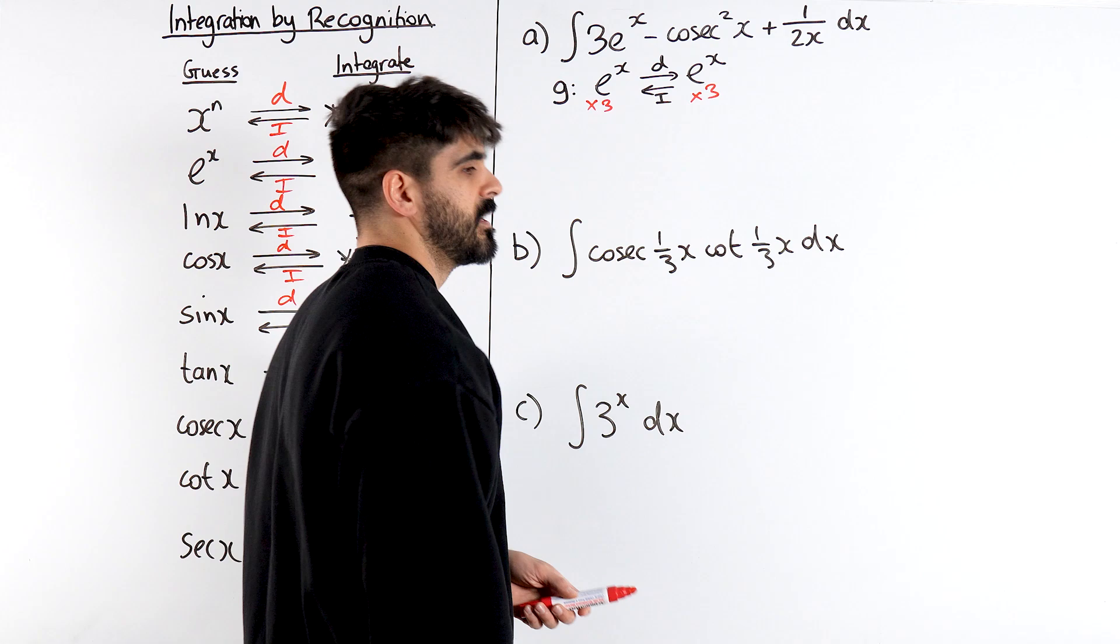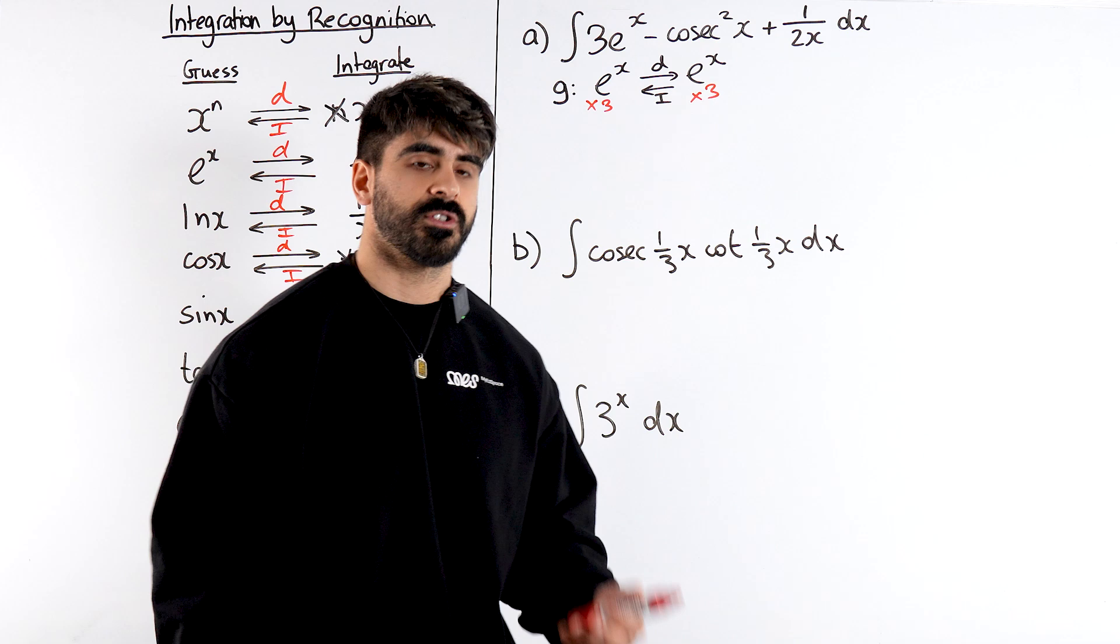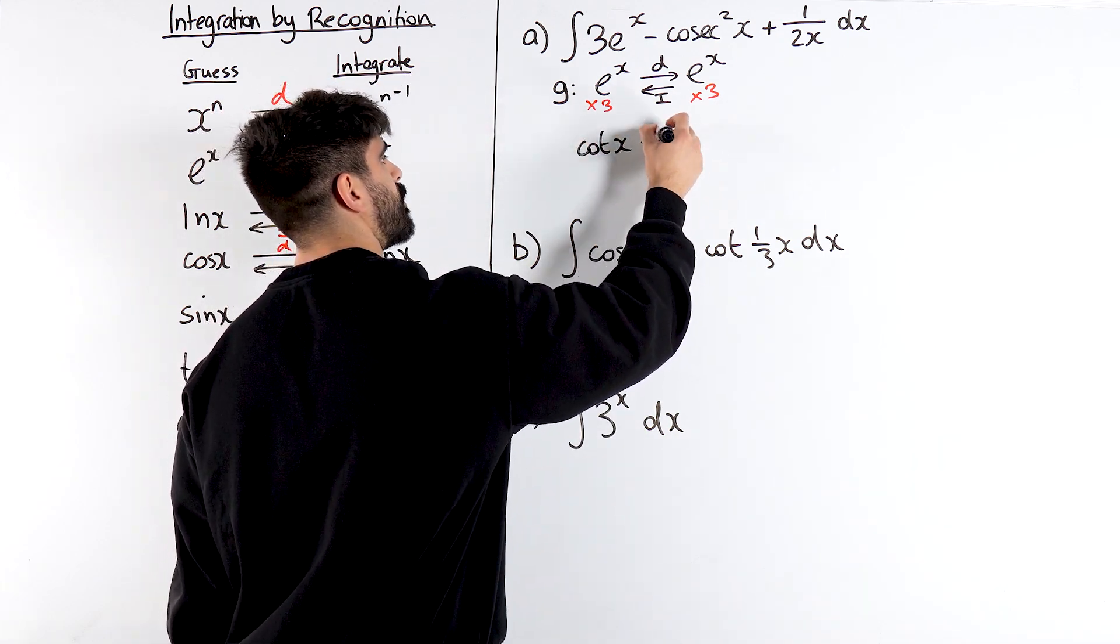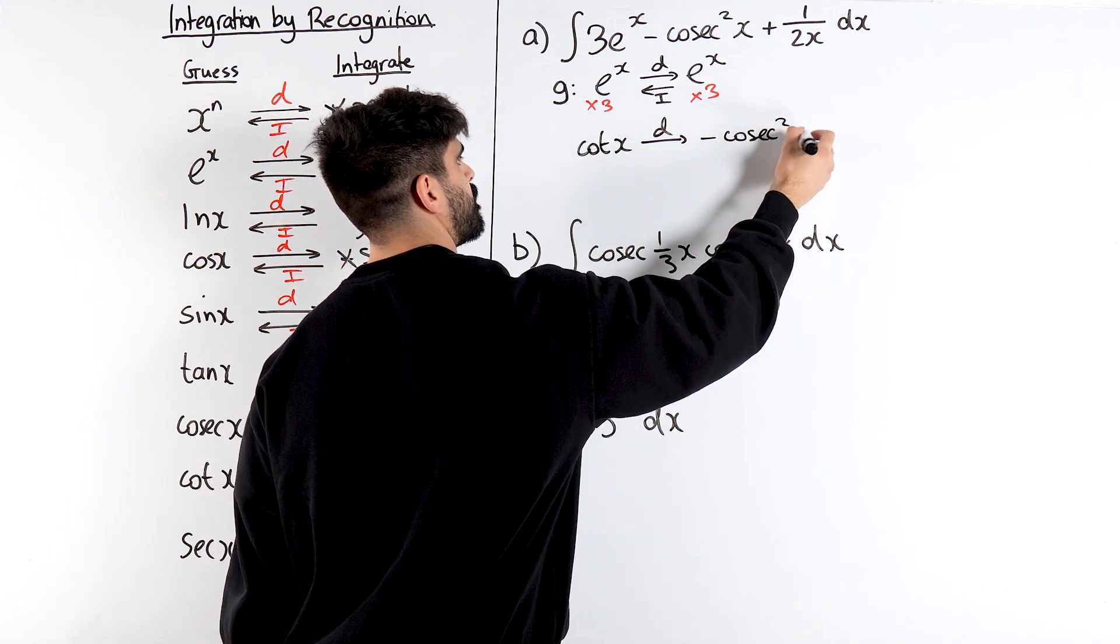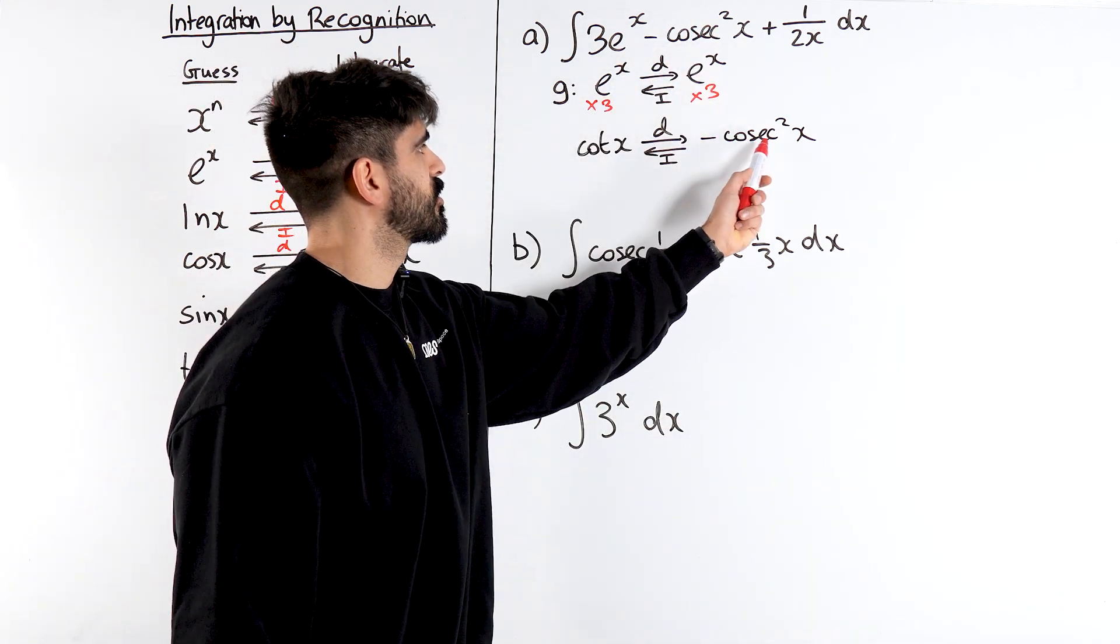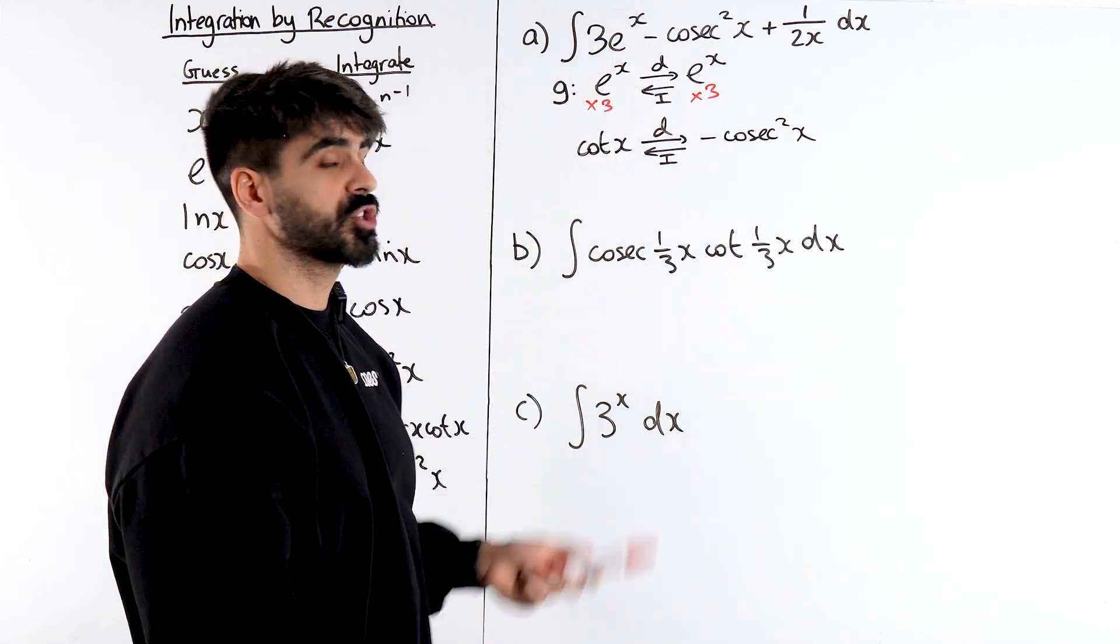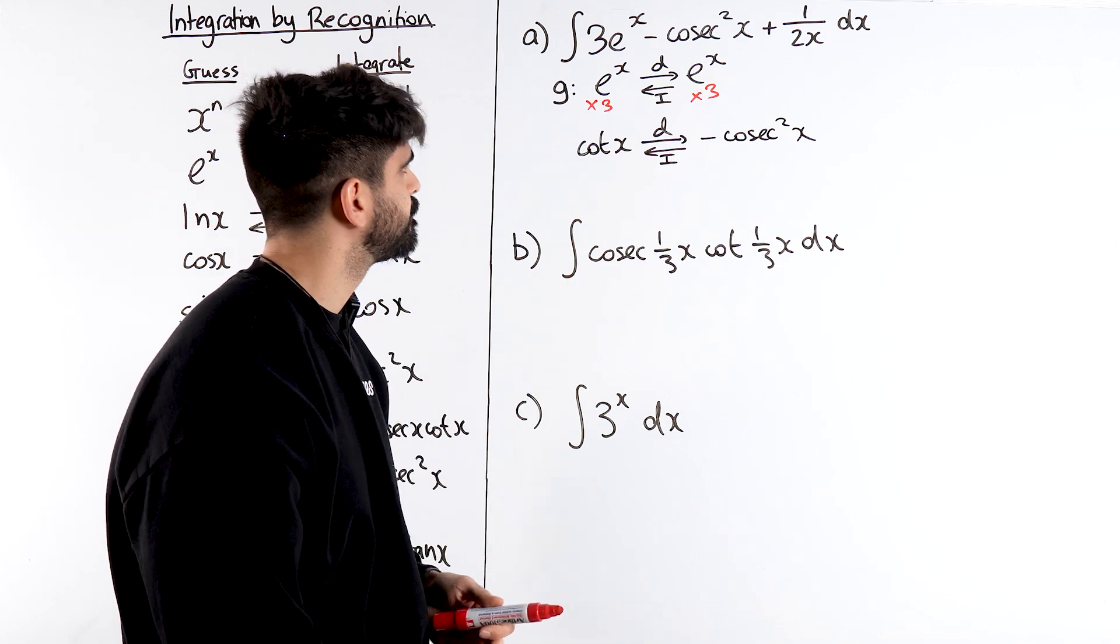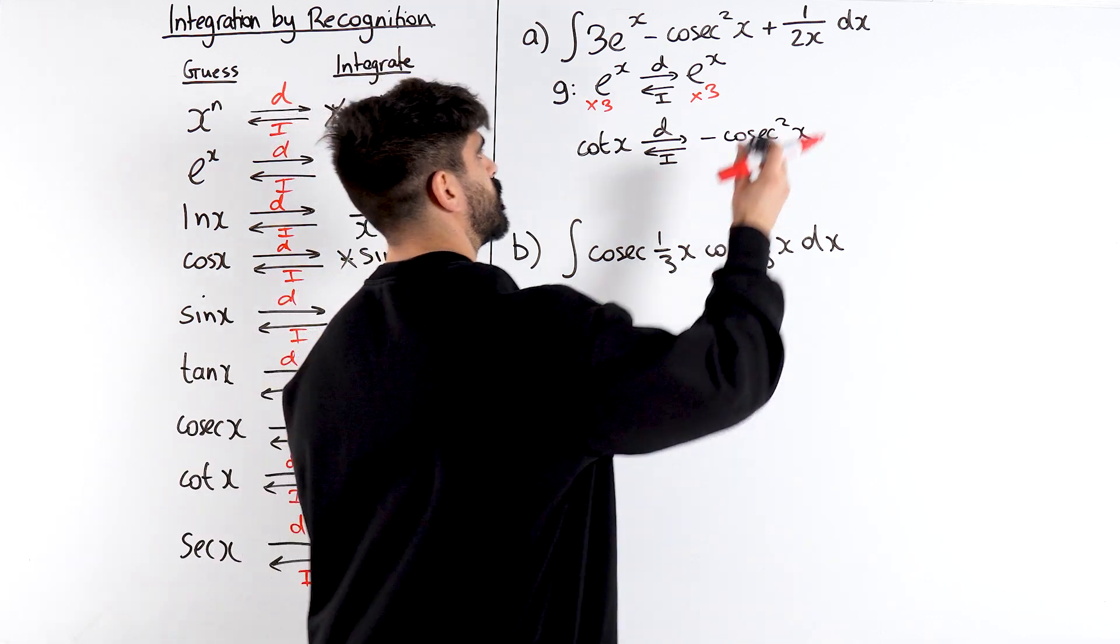Cosec x squared. I'm thinking from my experience of differentiation what differentiates to cosec x squared? That's cot. I'm going to write cot. Then in that process of differentiation cot differentiates to minus cosec squared. So that integrates back to this. That's great because that says minus cosec squared so it just goes to a positive cot. Very important. Students just write minus cot. They don't take into account that there's that negative there which is why this process is very useful.